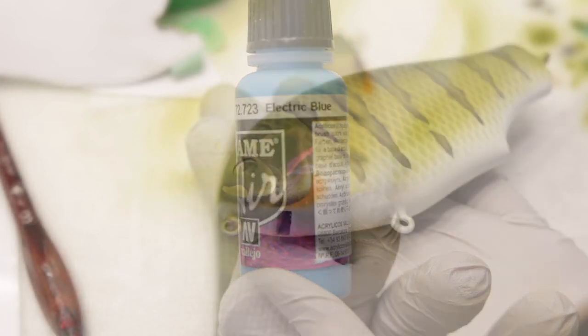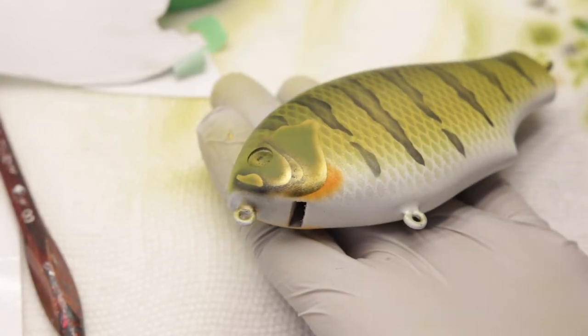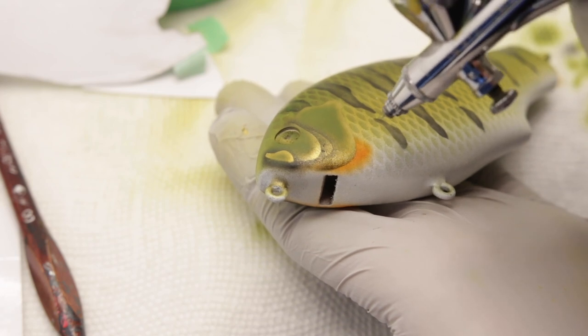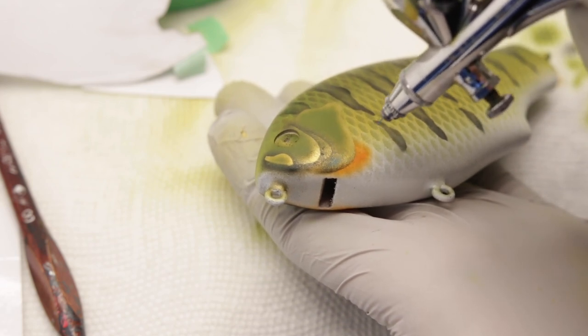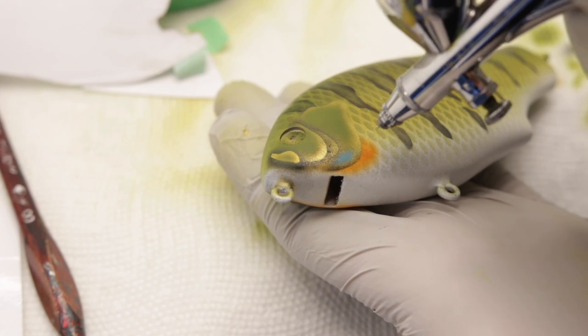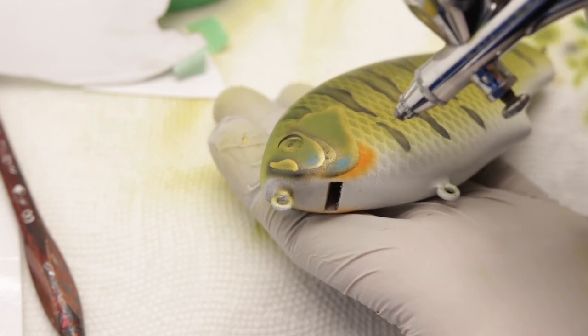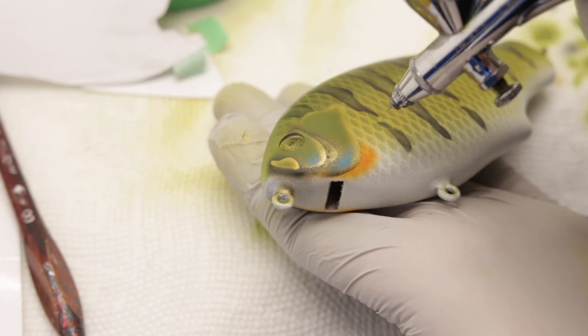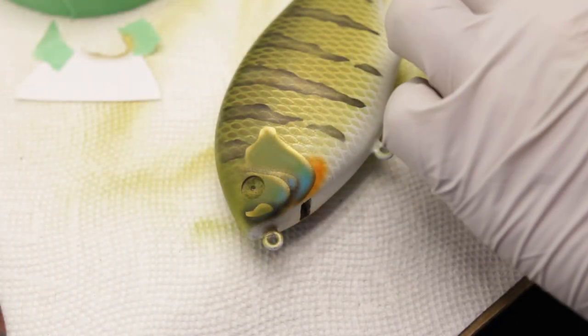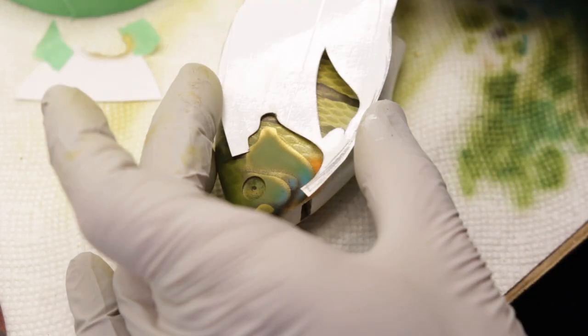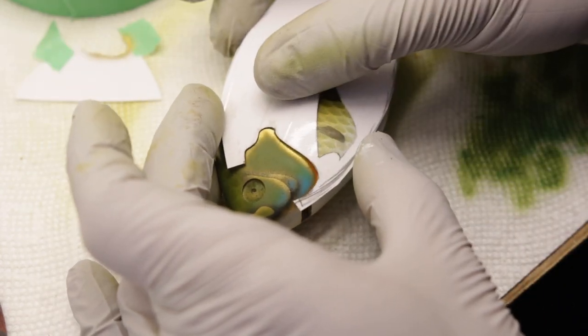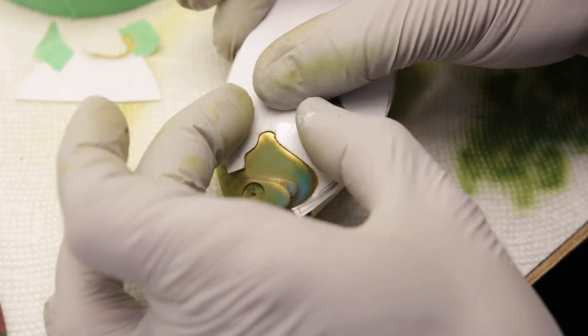A bluegill wouldn't be a bluegill without having some blue in the gills. So that's what we're adding next. And of course this bluegill definitely deserves that little spot of black on top of their gills.